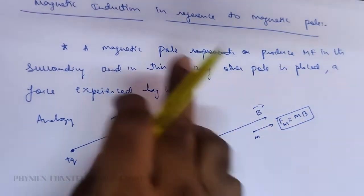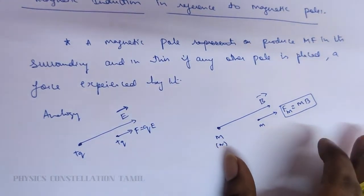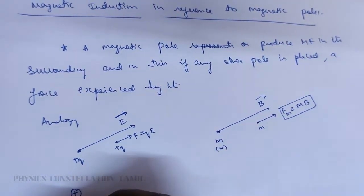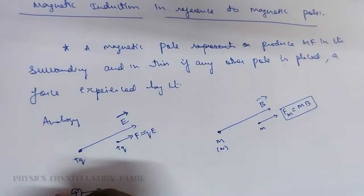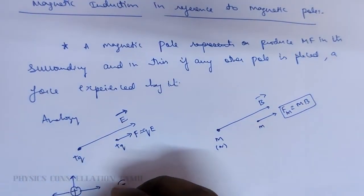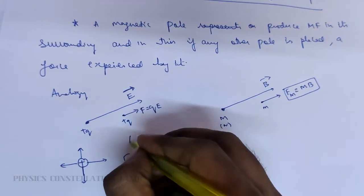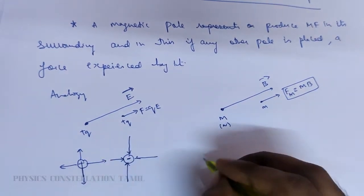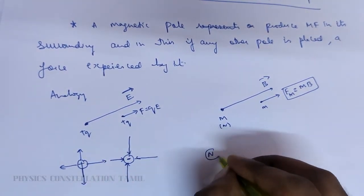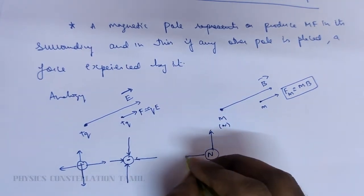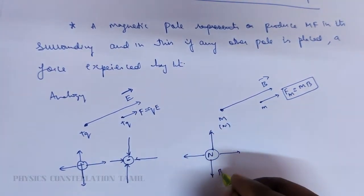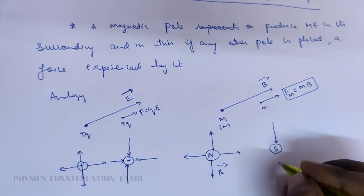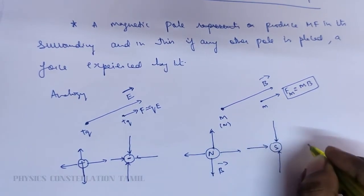The force exerted is one of the magnetic induction reference to the magnetic pole. So, this is the magnetic field, similar to the electric field — like this.